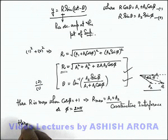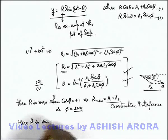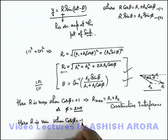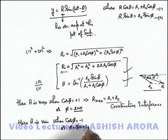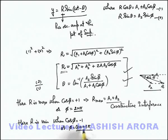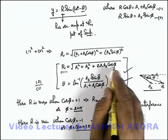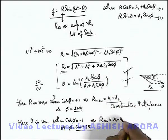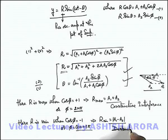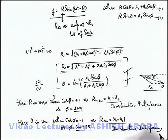Similarly, r is minimum after superposition when cos phi = -1, which happens when phi = (2n + 1)pi — that is, when the 2 oscillations superpose in opposite phase. The minimum amplitude in this situation is |a1 - a2|. This is the interference we call destructive interference, when the resulting amplitude at the point of superposition is minimum.